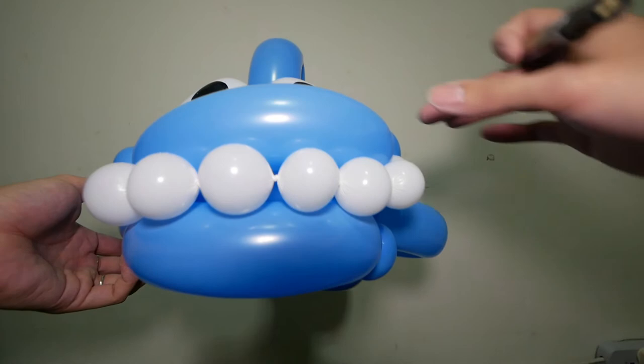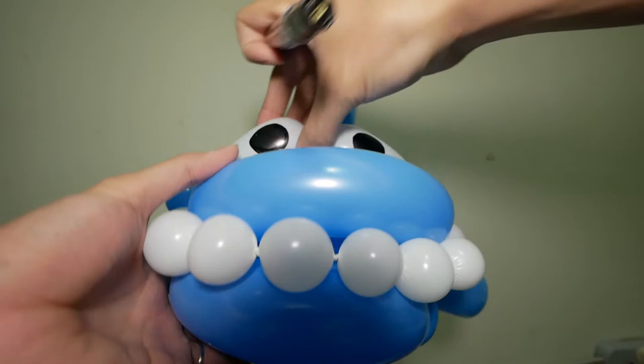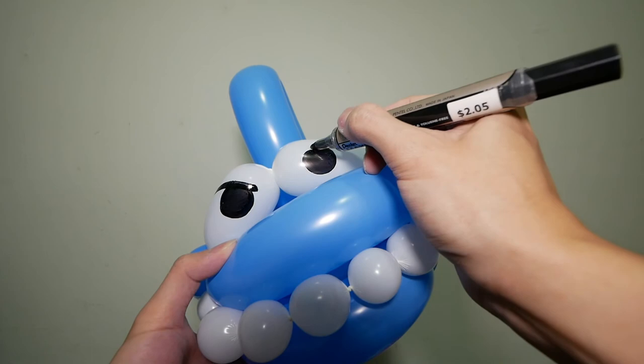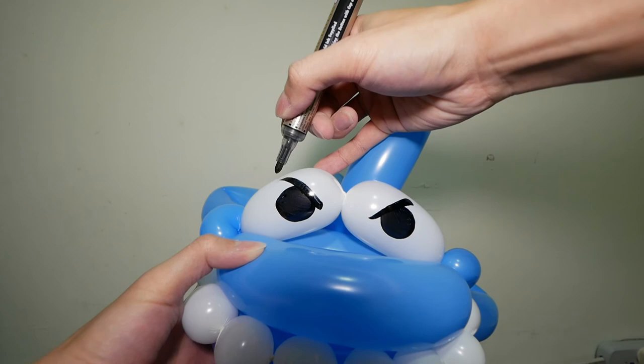There we go. You can stop here if you want a friendlier shark, but if you want a more fierce one, you can draw the eyebrows like this, so straight down diagonally like this. Same for the other side.